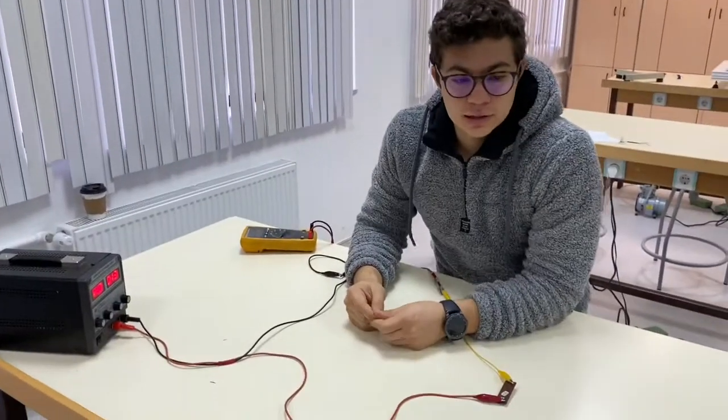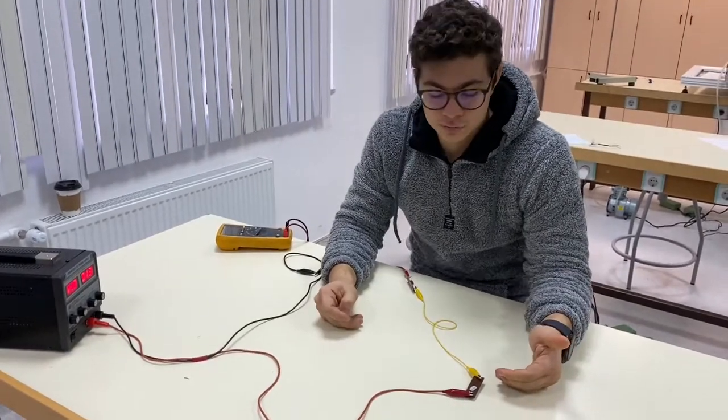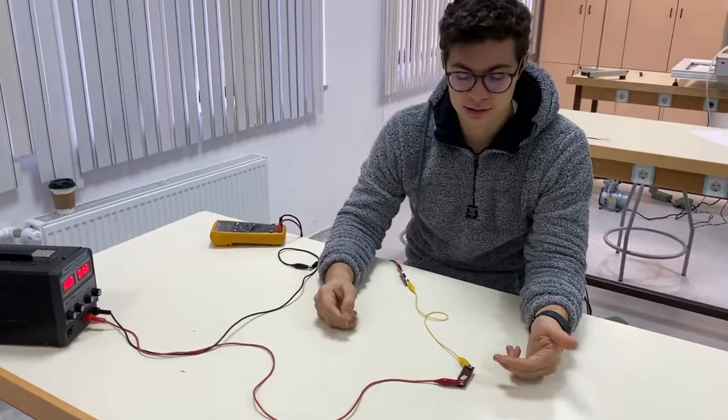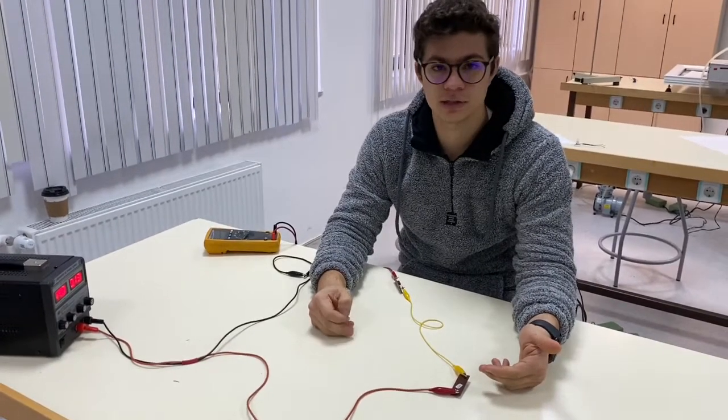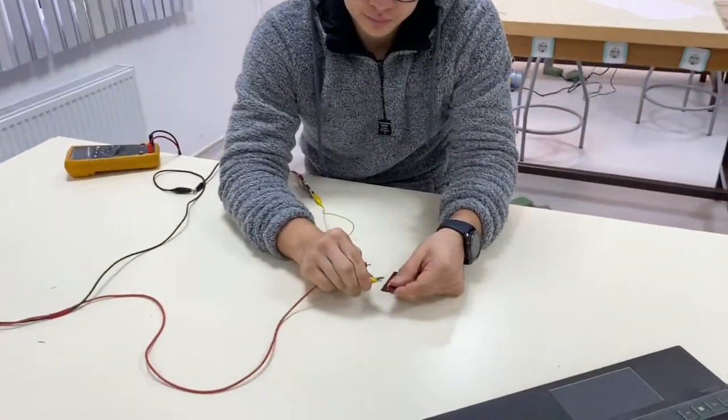As we did before, the experiment was done with forward bias, so now we will change the bias of the diode. Then the current will be zero, so now I'm changing the biases.